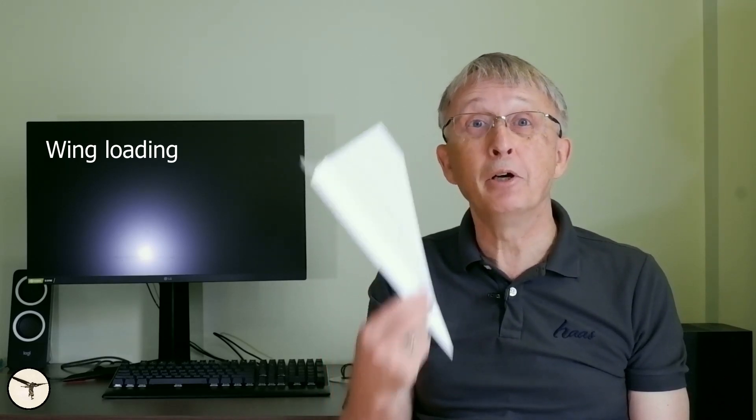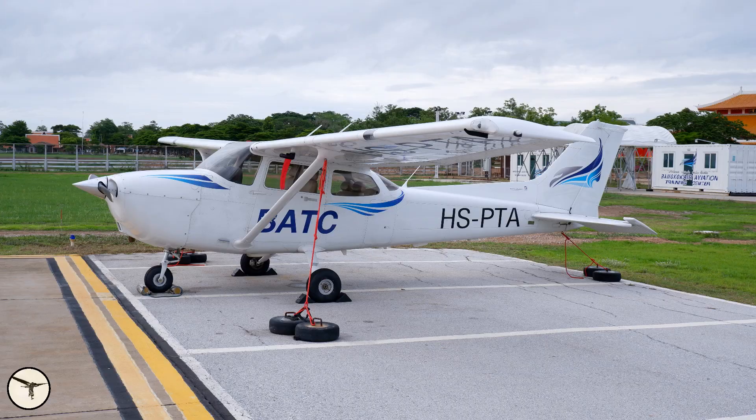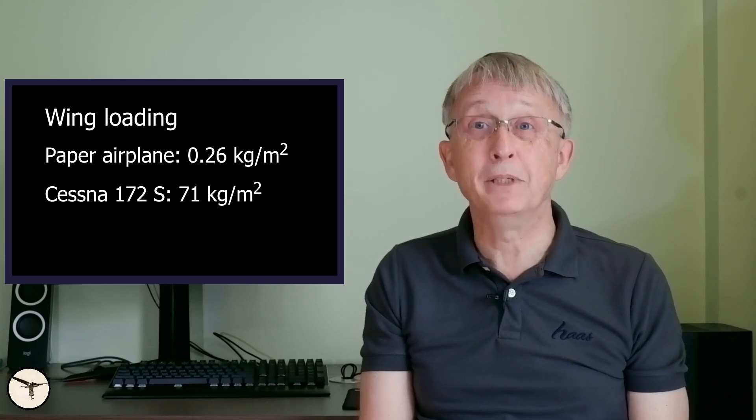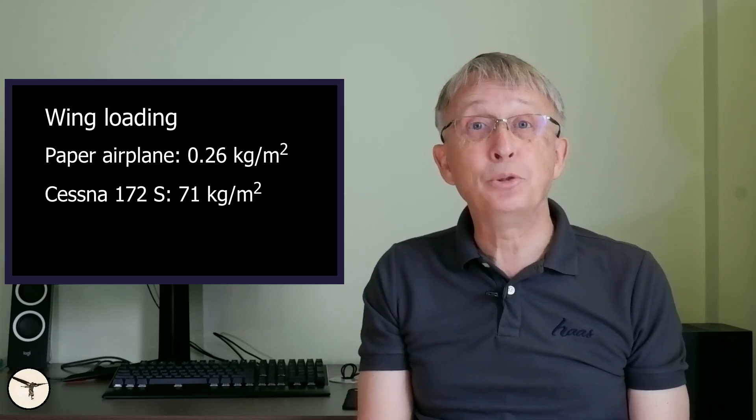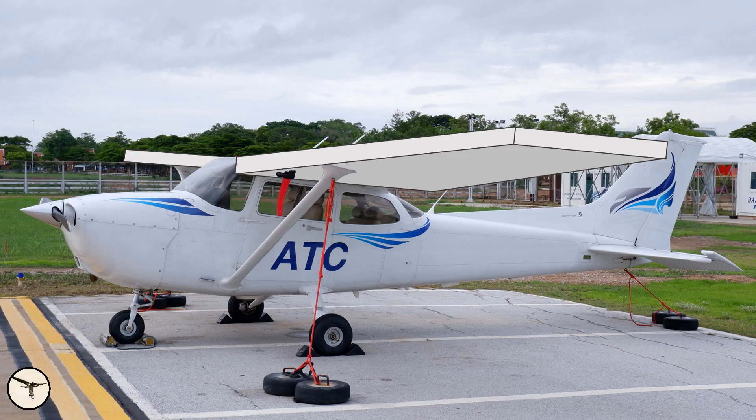Some people argue that paper planes and model aircraft can fly with flat wings. Yes, but this only works when you have a very low wing loading. This paper airplane has a wing loading of 0.26 kilos per square meter. A fully loaded Cessna 172S has a wing loading of 71 kilos per square meter. That is 273 times more than a paper airplane. If you put a flat wing on a Cessna 172, I guarantee it will not fly.